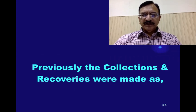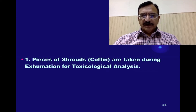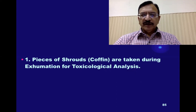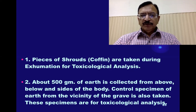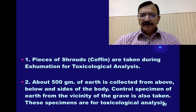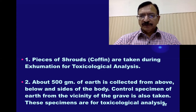Previously, the collection and recoveries made in some other parts of the world include: number one, pieces of shroud or coffin, taken during examination for toxicological analysis; and number two, about 500 grams of earth collected from above, below, and sides of the body. One control specimen of earth from the vicinity of the grave is also taken, and these specimens are for toxicological analysis.